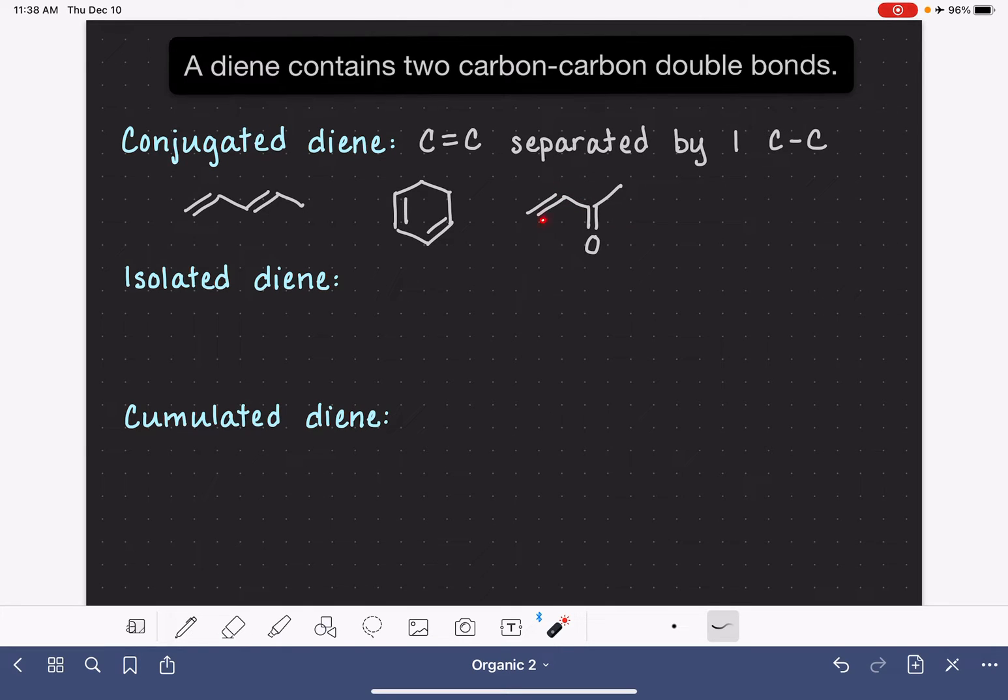We could also have a triple bond in this as well, and it would still be classified as conjugated. What really matters is that the multiple bonds are separated by exactly one single bond.